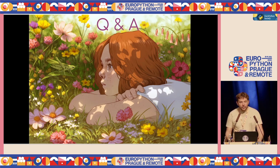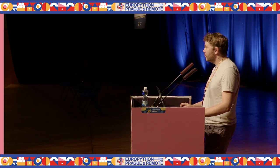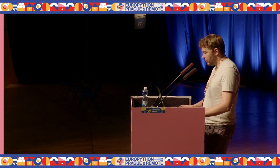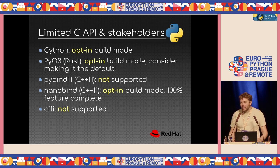Q: We're using a lot of PyBind11. As you said, it's not compatible. NanoBind I think is from some of the same authors — do you know how easy it would be to switch to NanoBind and use the limited C API? A: Sadly, I'm not familiar with that project. I know NanoBind is a newer project supposed to be as complete or even replace PyBind11, but I have no idea how easy it is to migrate. You should give it a try.